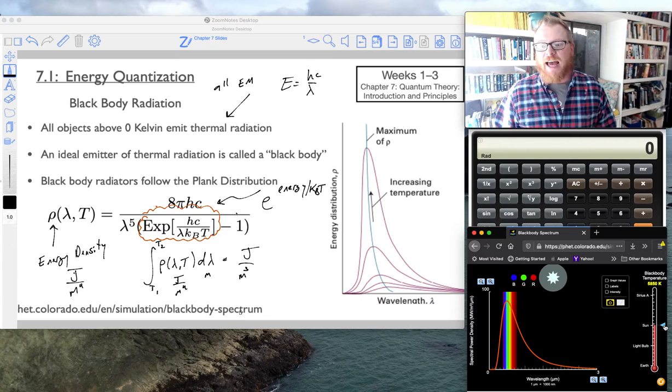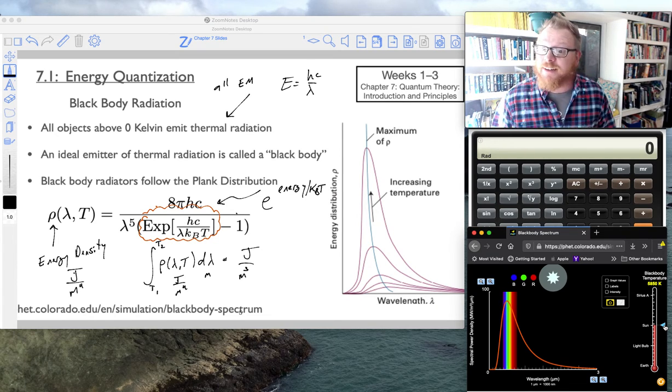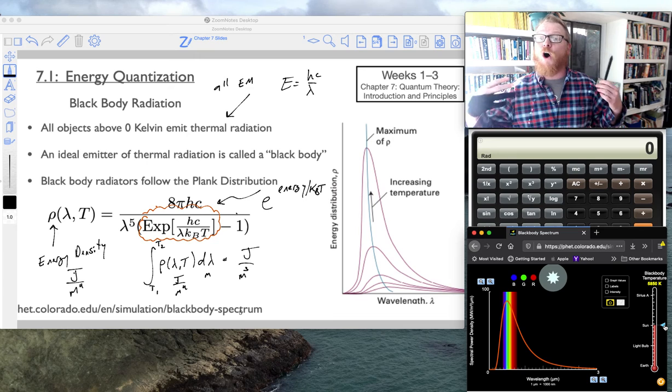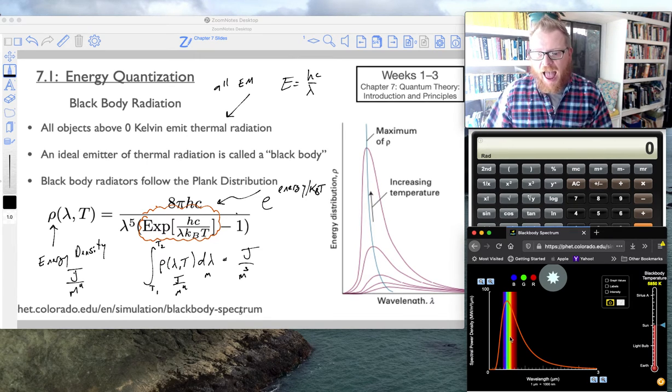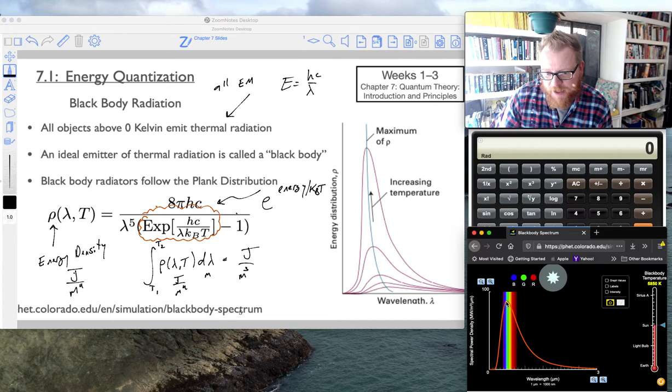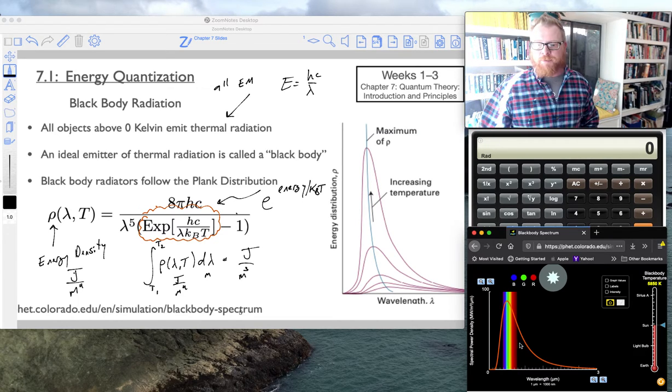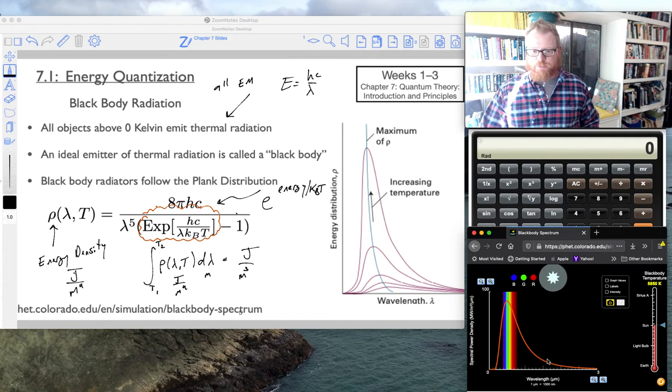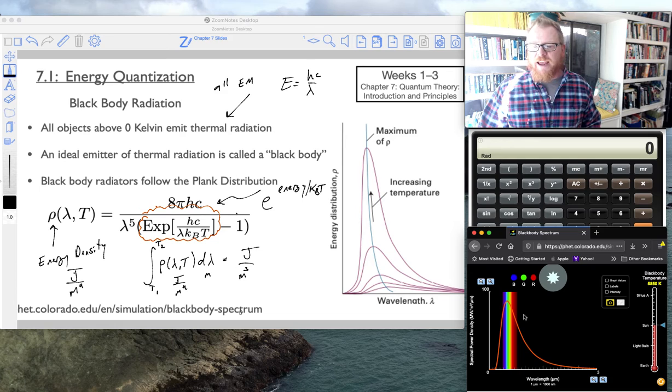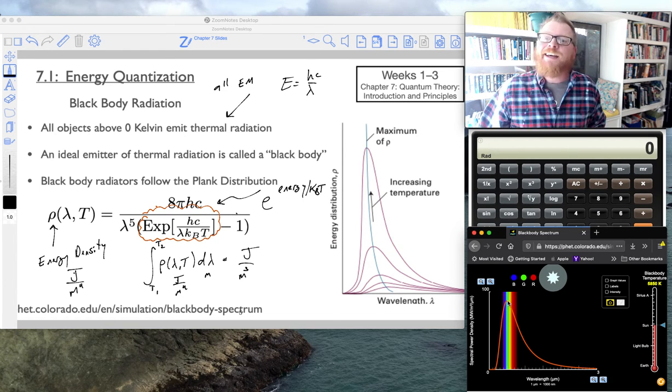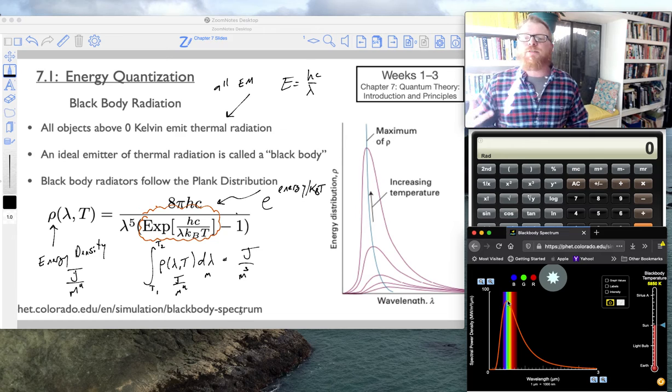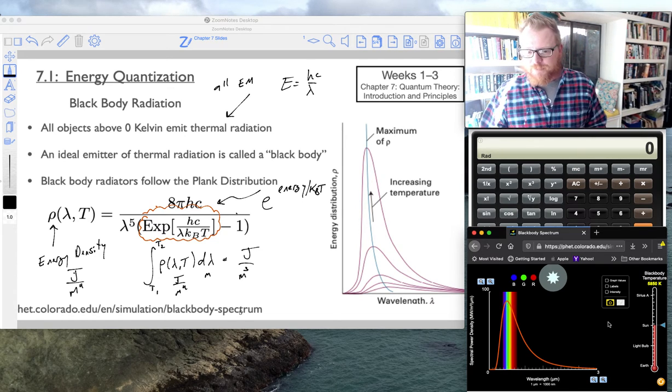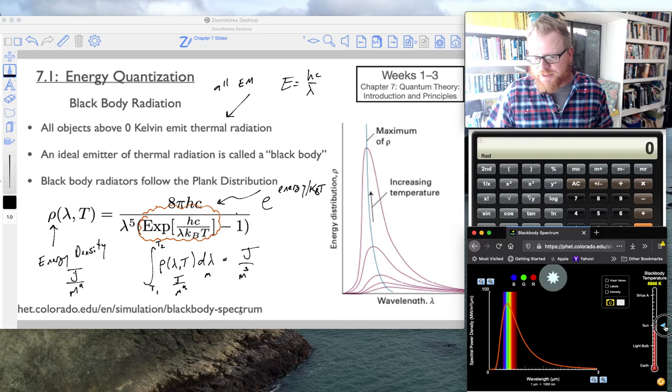Our sun emits white light. The reason why it does that is because it is an object that is 6,000 Kelvin. It emits all of the visible wavelengths as well as some ultraviolet. You can see the tail end of this distribution goes past the UV, so our sun obviously emits some ultraviolet. But our sun also emits a lot of IR, which you can see goes past the visible region. Even though it's peaking in the green, to our eyes, the sun appears kind of yellow.